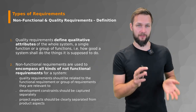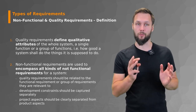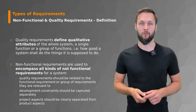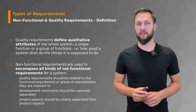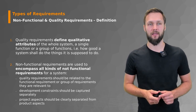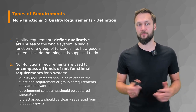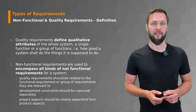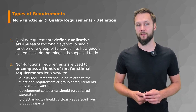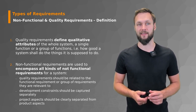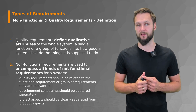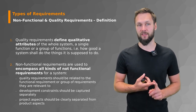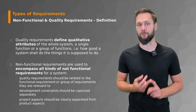Now that we've covered functional requirements in more detail, let's move to quality requirements, also called non-functional requirements. Quality requirements define qualitative attributes of the whole system, a single function, or a group of functions — essentially how well a system should do the things it is supposed to do. Quality requirements should be related to functional requirements or a group thereof. Development constraints should be captured separately, and project aspects should be clearly separated from product aspects.